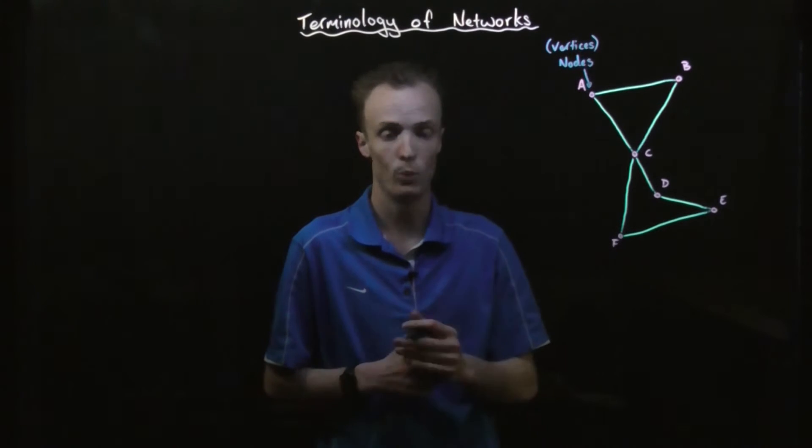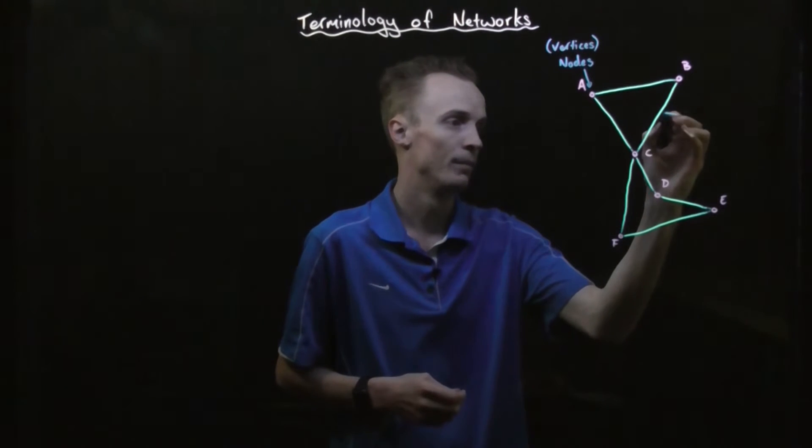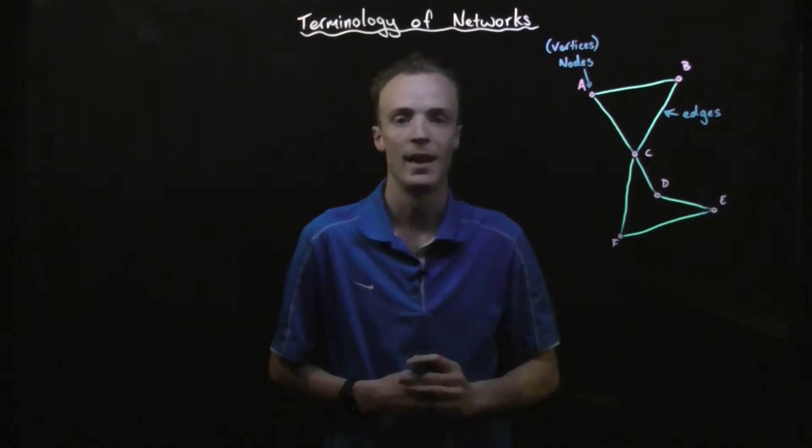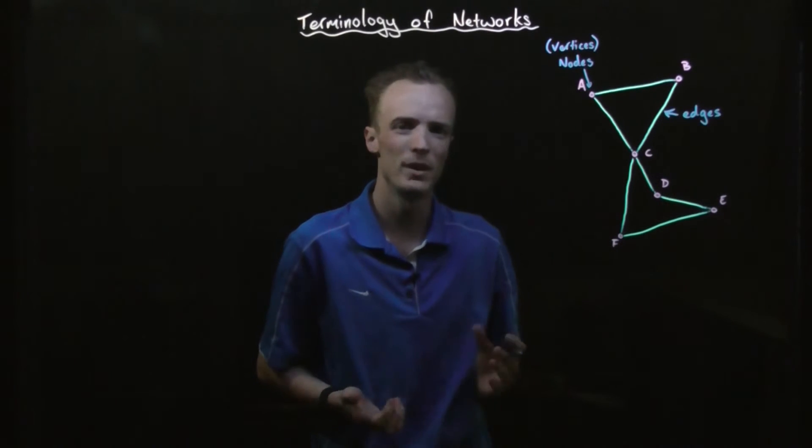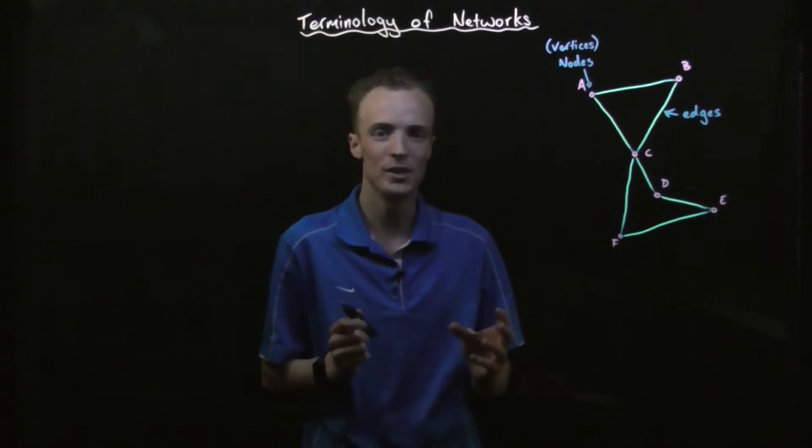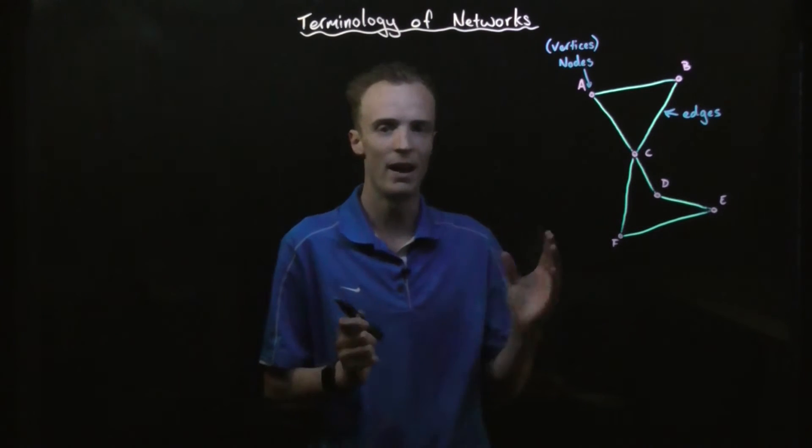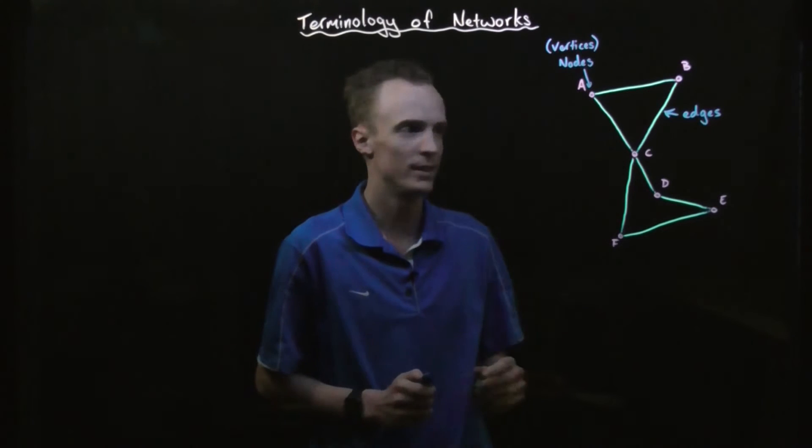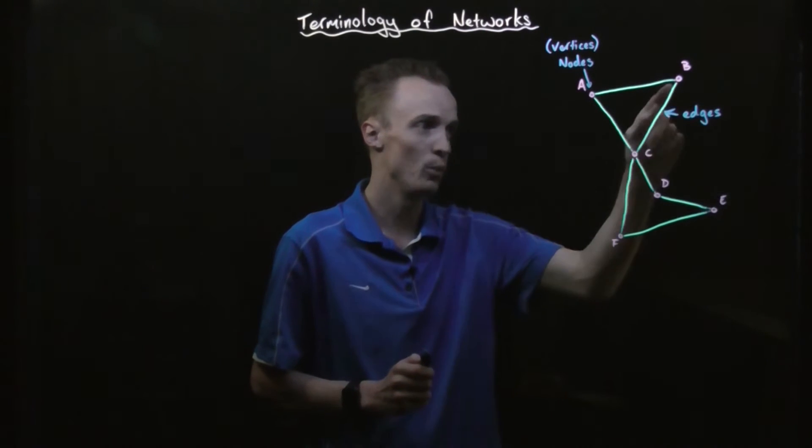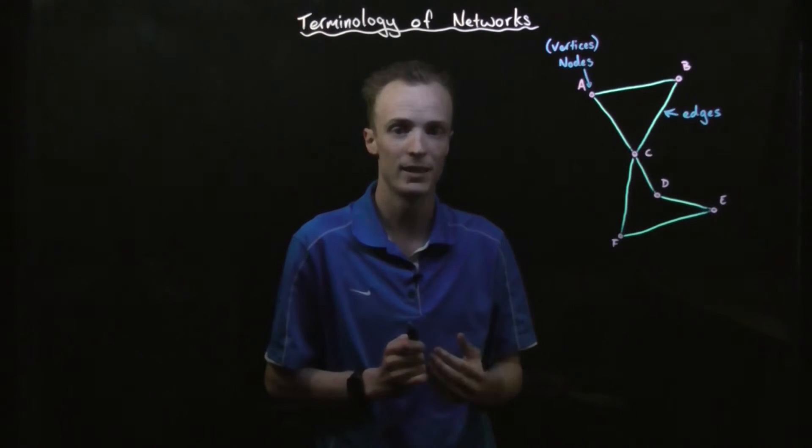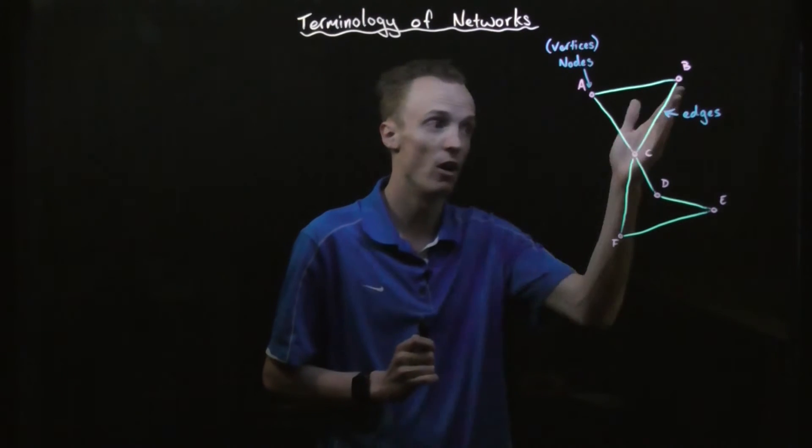Now, the lines that connect between them, we call edges. However, when we're talking about networks, edges actually have to meet a specific set of requirements in that they can't have a direction. That means that the traffic that flows between an edge has to be multiple direction. It can go either way.